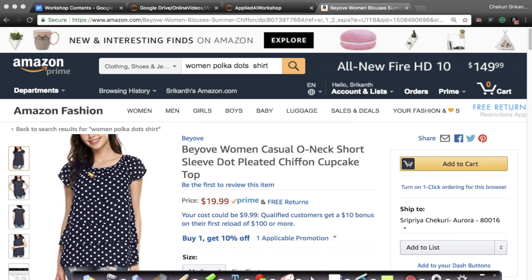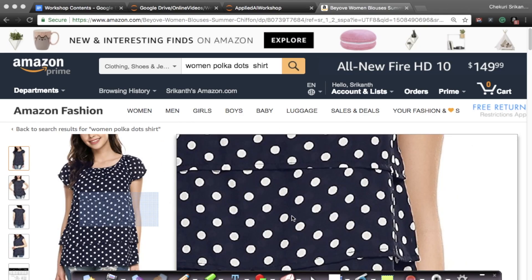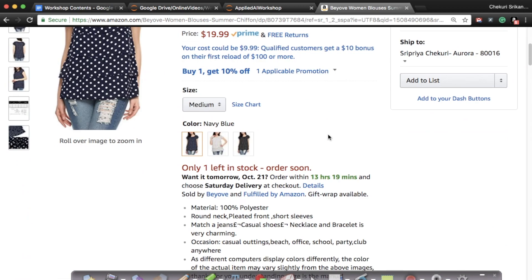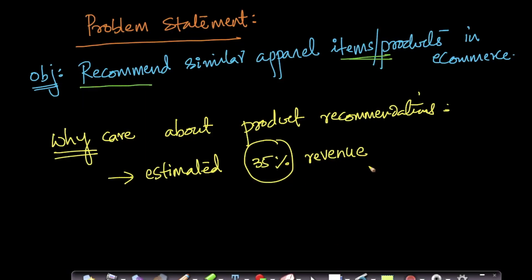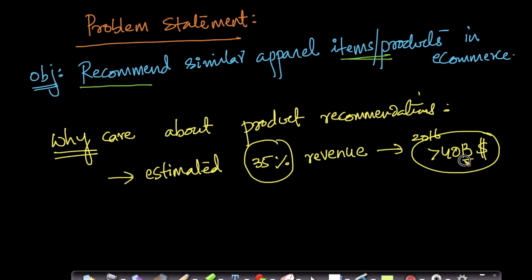When somebody is on a product page, they not only look at that product but also at all the related products, and they probably end up buying some of those related items. That generates almost 35% of revenue for Amazon — and looking at 2016 revenues, that's more than 40 billion dollars. That's a massive amount of revenue because of product recommendations, so most companies will care about it.